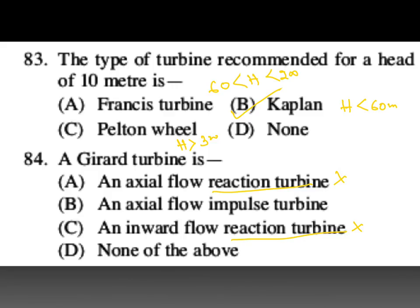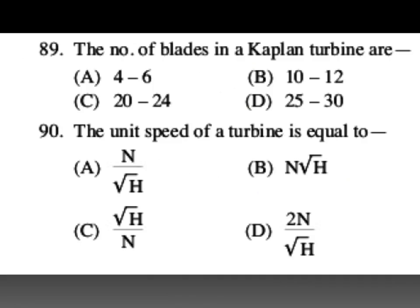B is your answer. The number of blades in a Kaplan turbine is 4 to 6. Kaplan turbine is an axial flow reaction turbine. The unit speed of a turbine is defined next.